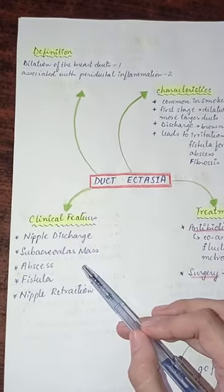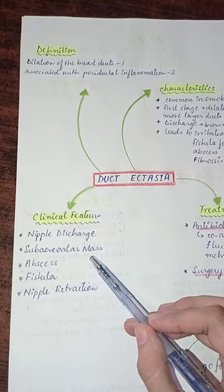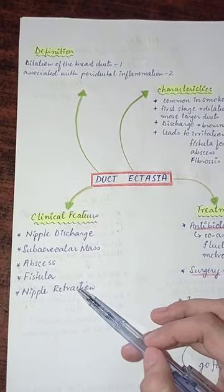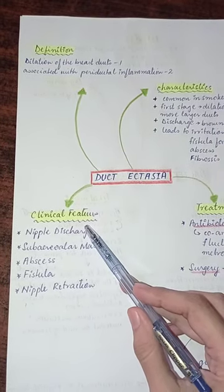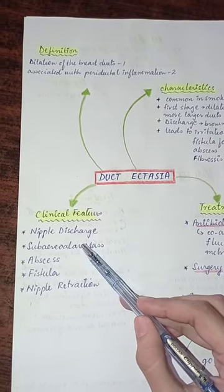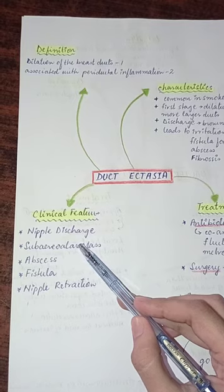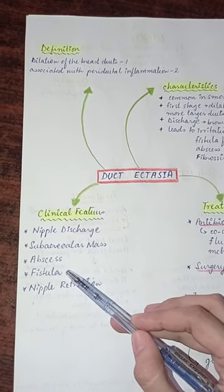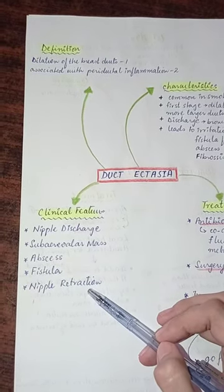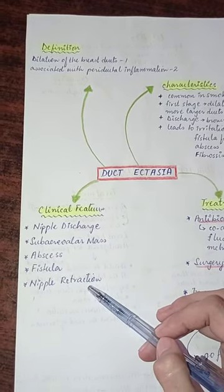The clinical features for duct ectasia — there are five clinical features: nipple discharge, subareolar mass, abscess, fistula, and nipple retraction.